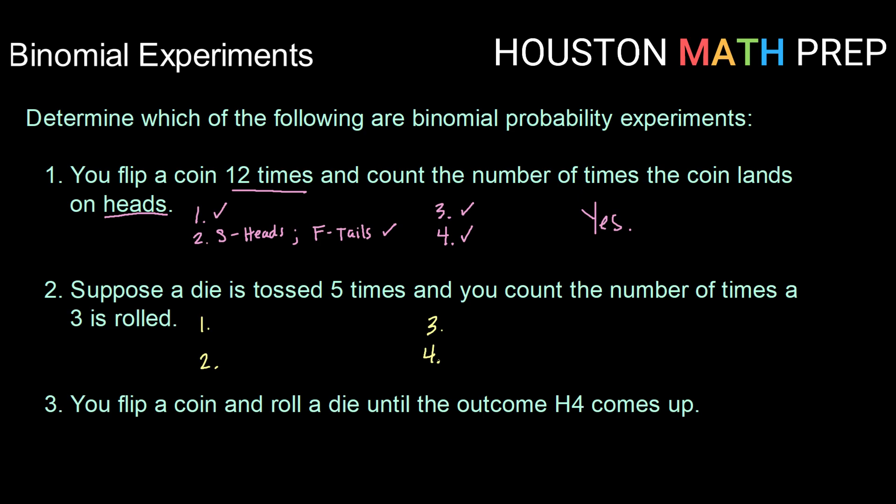Since we are tossing that die five times, we do have a fixed number of trials. And each time that we roll the die, it should be independent of the previous roll. So we meet the first criteria.